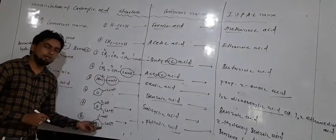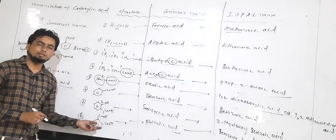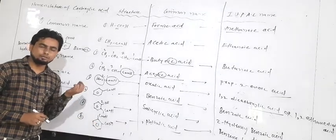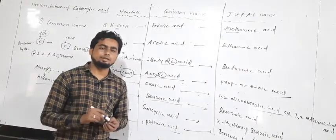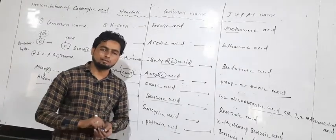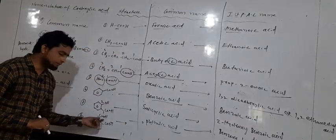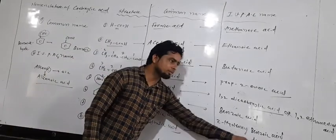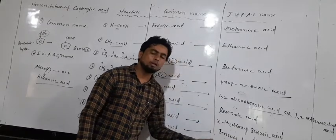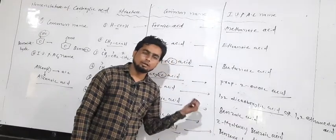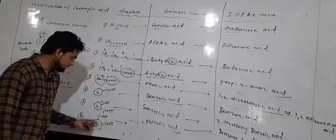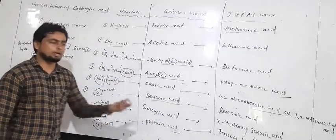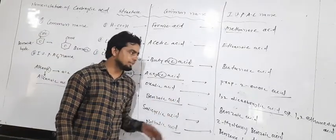Last example: benzene attached to two similar carboxylic acid groups. Here, '-e' is retained as it is. We use the word '-dioic' at the end. The IUPAC name is benzene-1,2-dicarboxylic acid, or benzene-1,2-dioic acid.